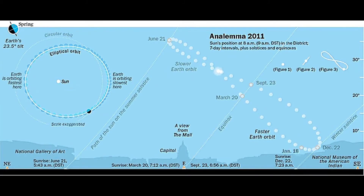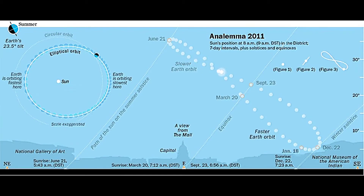But because of earth's elliptical path around the sun, one part of its path is closer than the other. This means the earth moves faster around the sun when it's at its perihelion, or closest point, which is around the winter solstice, than when it's at its furthest distance, or aphelion, in the summertime. This difference in orbital speed gives the analemma its uneven figure eight appearance.